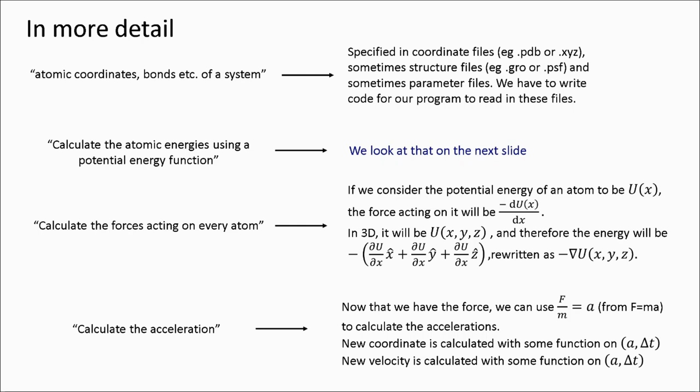Using the acceleration and an already specified time step duration, for example one femtosecond per step, we use some kind of function to calculate our new atomic coordinates and velocity. We then return back to calculating our energies once more.